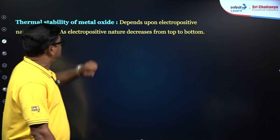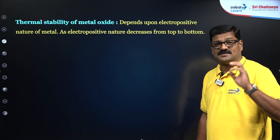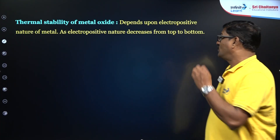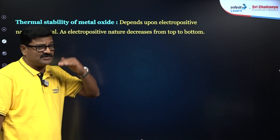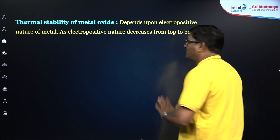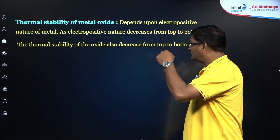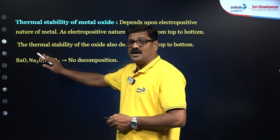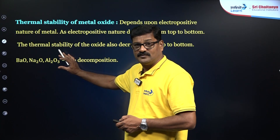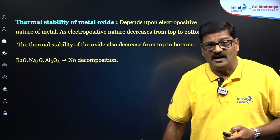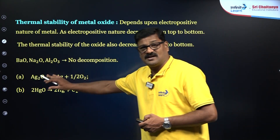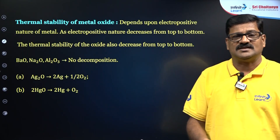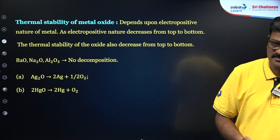Moving ahead to the seventh point: thermal stability of metal oxides. Depending upon the electropositive nature of the metal — as electropositive nature increases from top to bottom — the thermal stability of the oxide decreases from top to bottom. Barium oxide, sodium oxide, and aluminium oxide show no decomposition on heating. Whereas silver and mercury oxides are unstable and when they are heated, they decompose. Based on these key features of the electrochemical series, we can discuss a few NCERT-based questions.